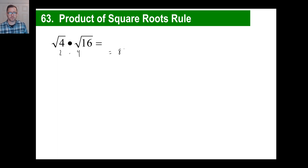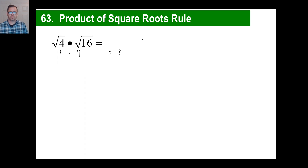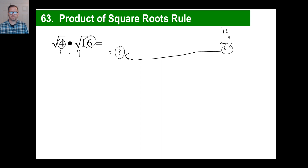I'll tell you what somebody did at some point. They went, wait a minute — 8. And look: 16 times 4, let's see, 16 times 4... that's 64. The square root of 64 is 8. Let's try it out.